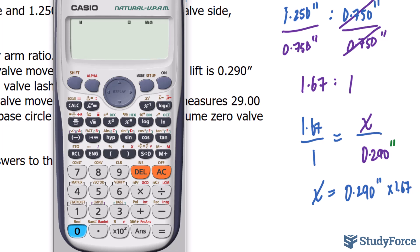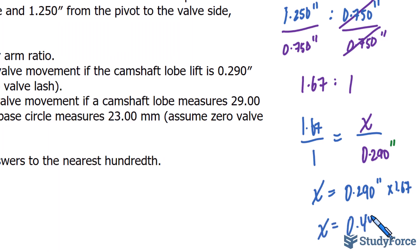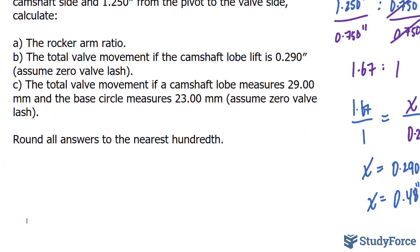So if we go into our calculator and take 0.290 and multiply it by 1.67, we end up getting a value that is roughly 0.48. 0.48 inches is our total valve movement.